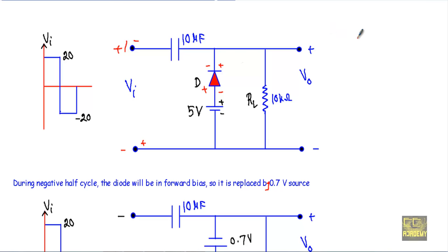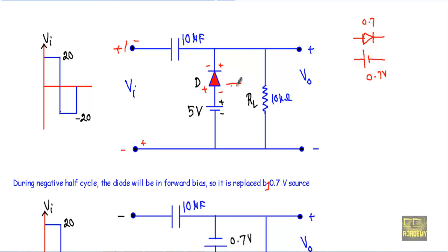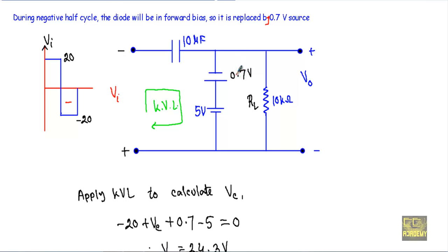The convention for replacing a diode is as follows: if I have a PN junction diode with a built-in potential of 0.7V, I will replace it with a voltage source equivalent to its built-in potential. The positive terminal of that voltage source will be on the P side and the negative terminal will be on the N side. So if I replace this diode with a 0.7V source, the positive terminal will be at one side and the negative terminal at the other side, giving us this circuit configuration during the negative half cycle.